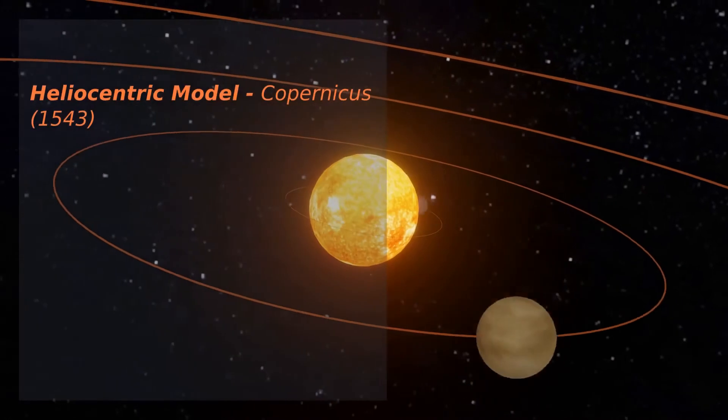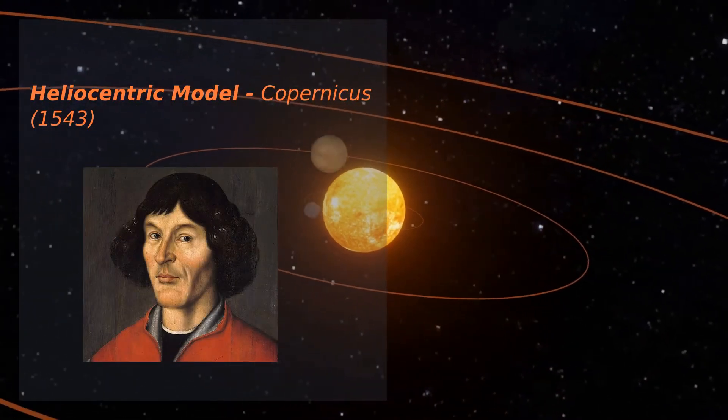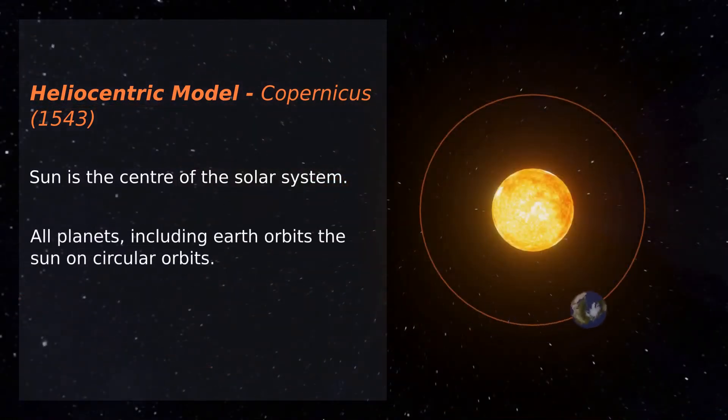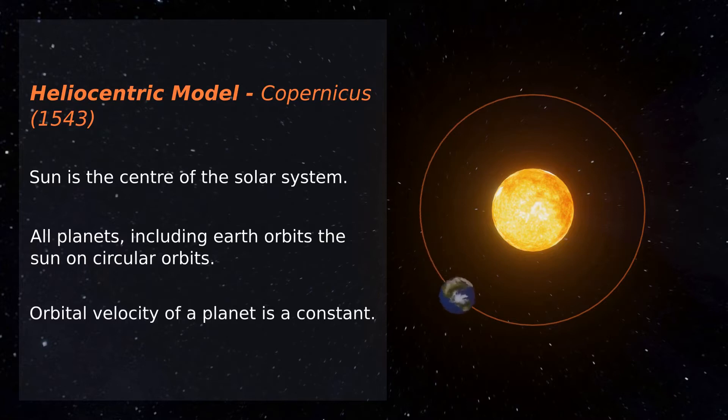In 1543 Copernicus came with a new model which placed the sun at the center, with all planets including Earth revolving around it in circular orbits with constant orbital velocity. This is called heliocentric or sun-centered model.